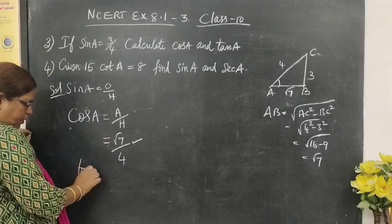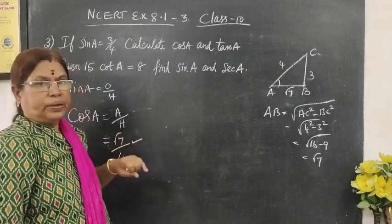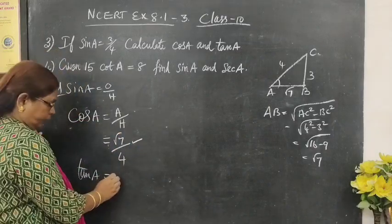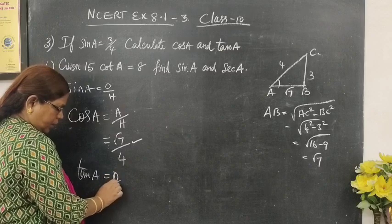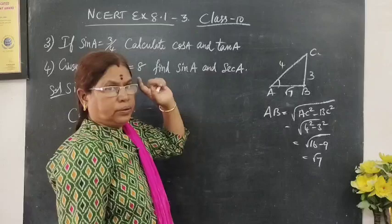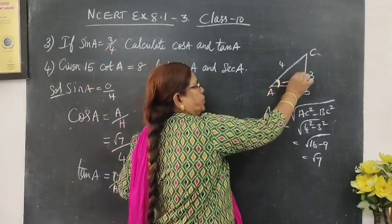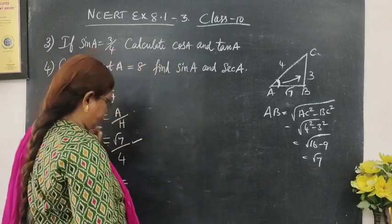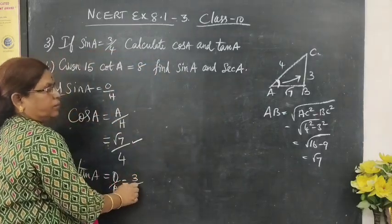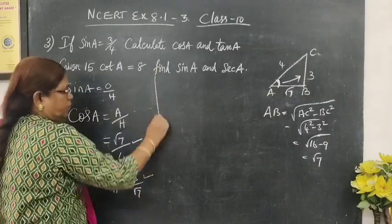Then next, tan A. Tan A is what? Opposite by adjacent. What is opposite? You are referring the angle A. So for this opposite side is 3. Then adjacent side is root 7. So this is the answer for this.